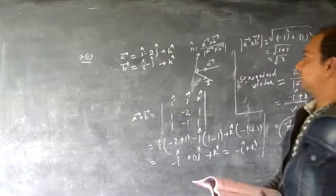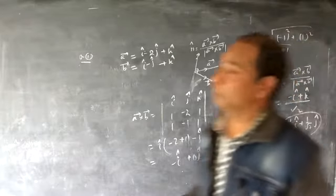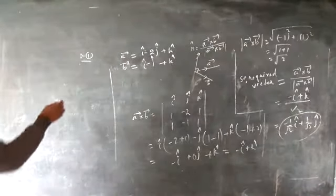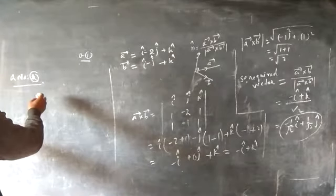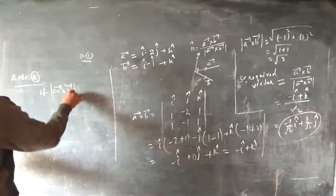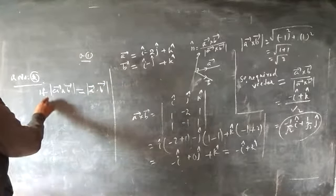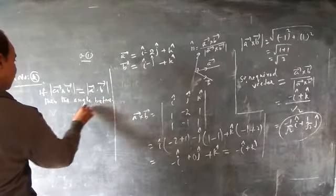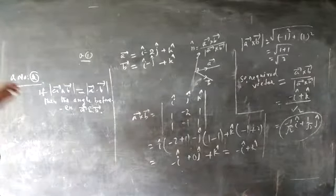Let's move to the next question. Question 2: If the modulus of a cross b equals the modulus of a dot b, then find the angle between vectors a and b. This is a two-marker and is very simple.